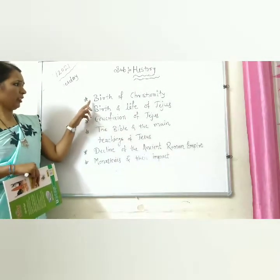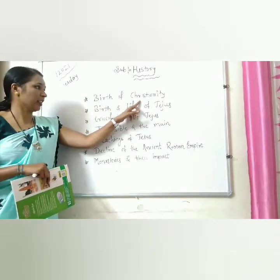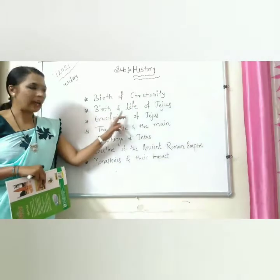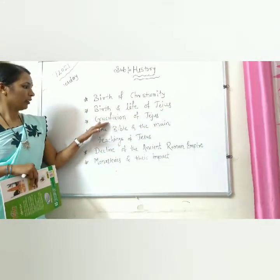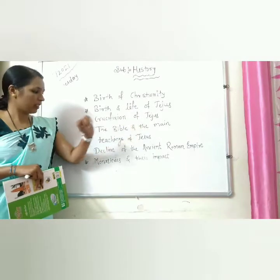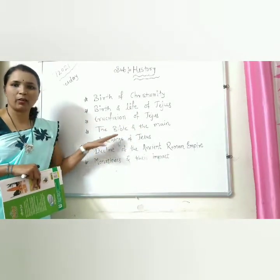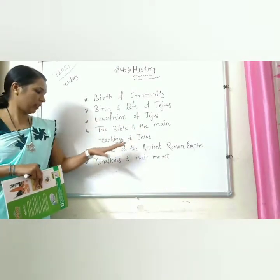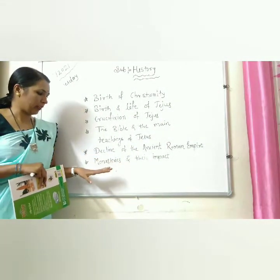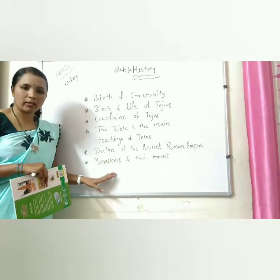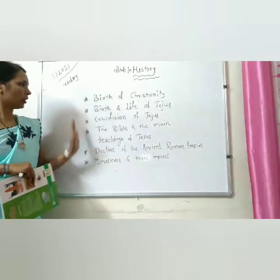In seventh standard we study about the Middle Ages. The Medieval Period started in Europe from 580 to 1500, and in India from the 8th century to the 17th century. In this chapter — Medieval Europe: Rise and Spread of Christianity — we will learn about the Birth of Christianity, Birth and Life of Jesus, Crucifixion of Jesus, the Bible, the Decline of the Ancient Roman Empire, and the Monastery and their impact.